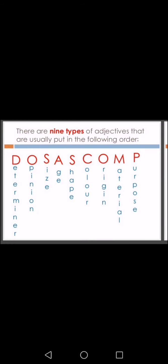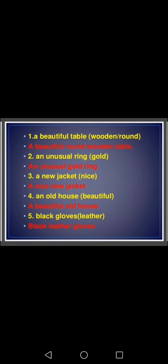You have to learn this correct order. You can memorize it as 'do sas comp' — do, sas, comp. There are nine types of adjectives usually put in this order. Now for exercises: 'a beautiful table' — adding the words wooden and round — the correct order is 'a beautiful round wooden table.' 'An unusual ring' — adding gold — gives 'an unusual gold ring.'